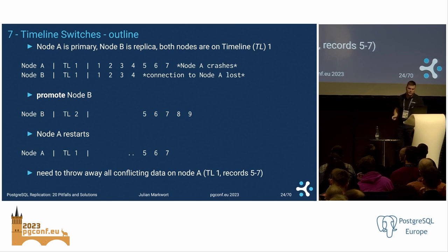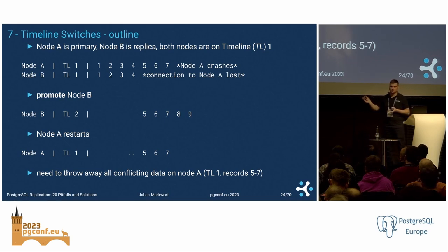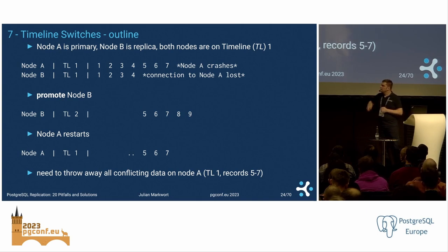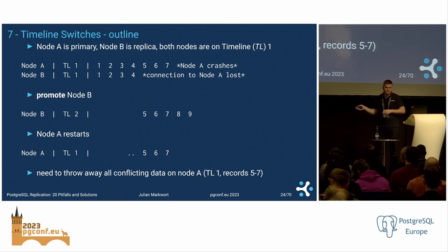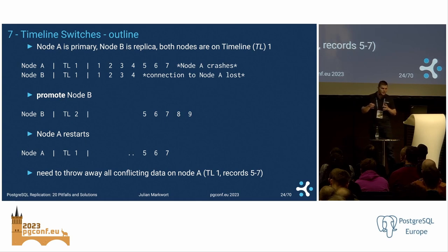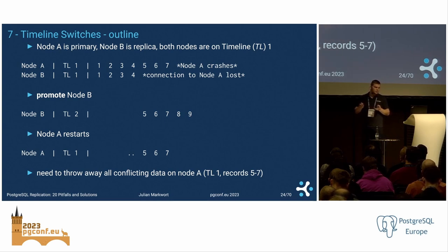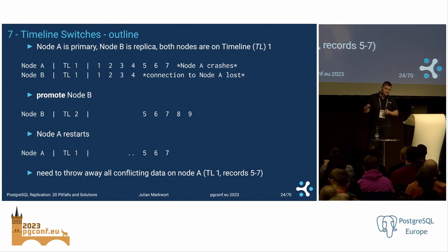The next pitfall is about timeline switches, which happen every time you promote a replica. Consider: node A is the primary on timeline 1, node B is a replica also on timeline 1. Node A writes records 1 through 7 then crashes. Only records 1 through 4 made it to node B. Your failover tool promotes node B, which switches to timeline 2 and starts accepting new writes, resulting in records 5, 6, 7, 8, 9. Then node A restarts.